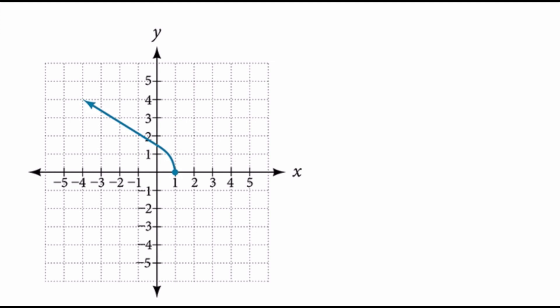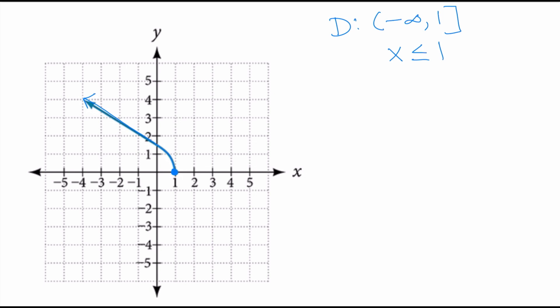At any point in this video, when you see a new graph come on, press pause to see if you can come up with the answer before I give it to you. Now let's look at this graph. Reading left to right, the graph is moving toward negative infinity on the left, so the domain comes from negative infinity and stops at positive 1 — including positive 1. That means all x-values less than or equal to 1. For the range, the lowest y-value is 0 and it continues to positive infinity, so all y-values greater than or equal to 0.